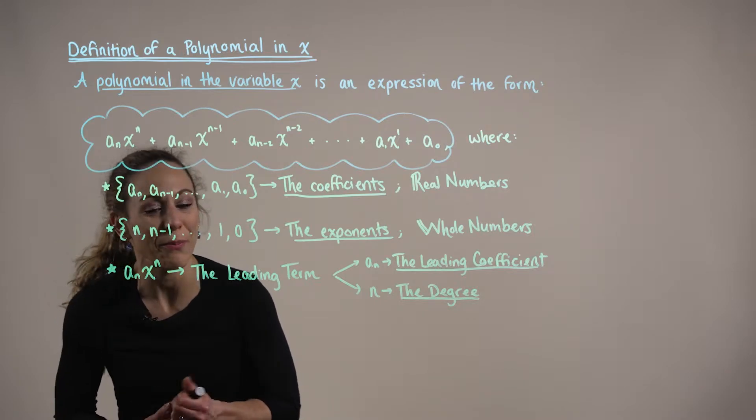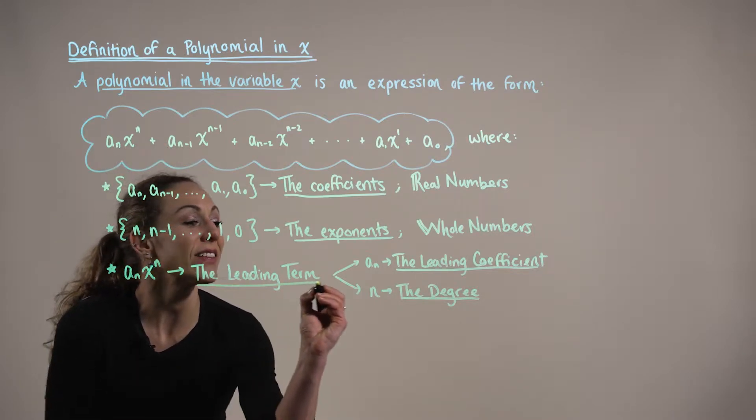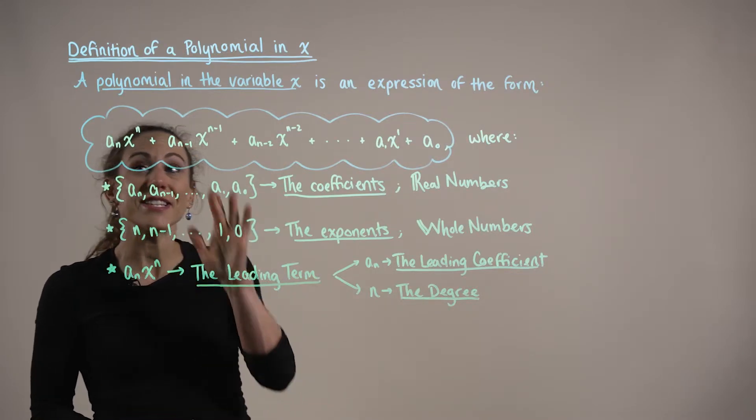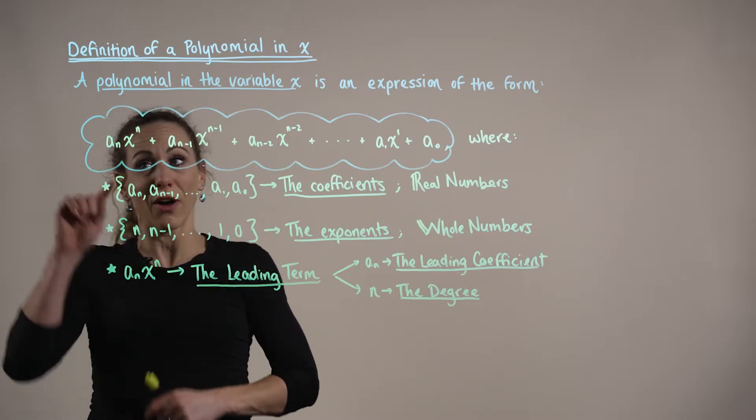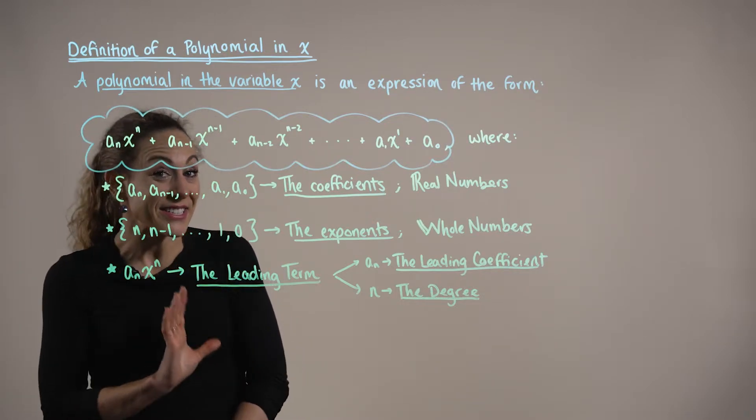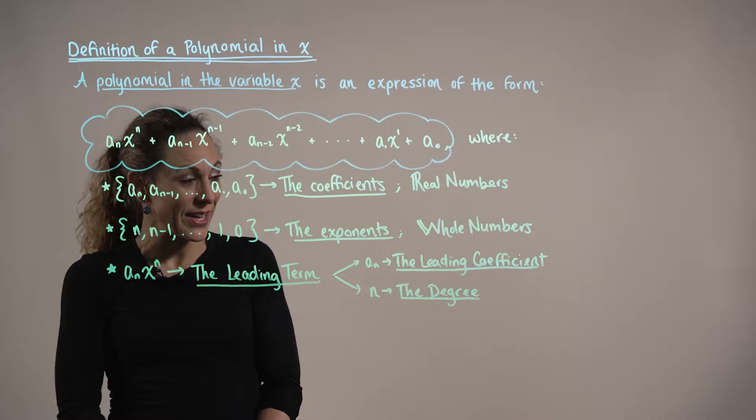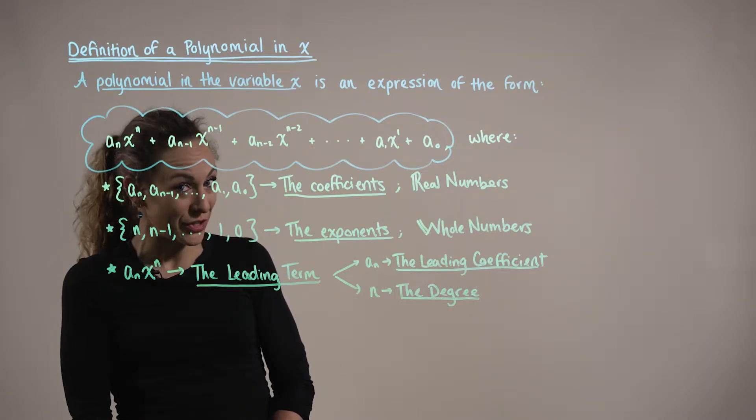One important feature of a polynomial expression is the leading term. This is the term in the expression where the constant a sub n is attached to the variable of the highest degree. We refer to this a sub n as the leading coefficient.